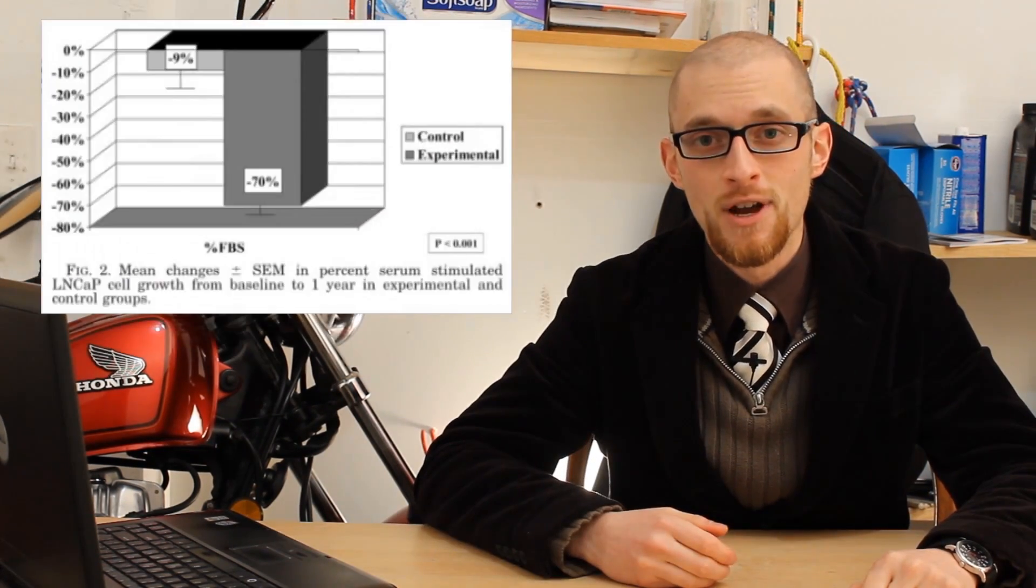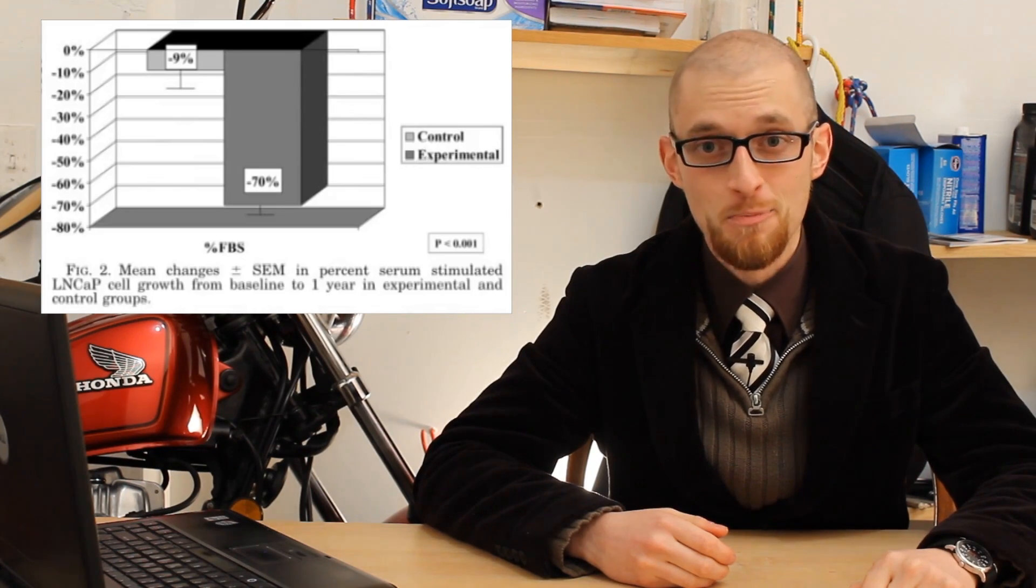And they found that vegan blood is significantly more effective at suppressing and destroying every type of cancer cell. How significant is the difference? Well, the numbers are different for every type of cancer, but in the case of prostate cancer, nearly eight times more effective.